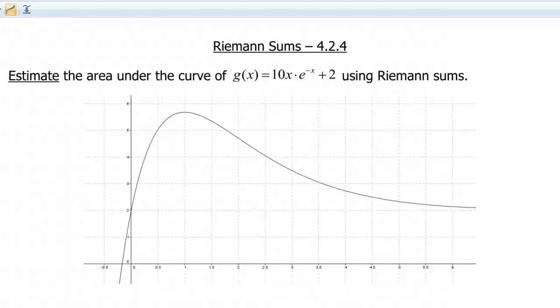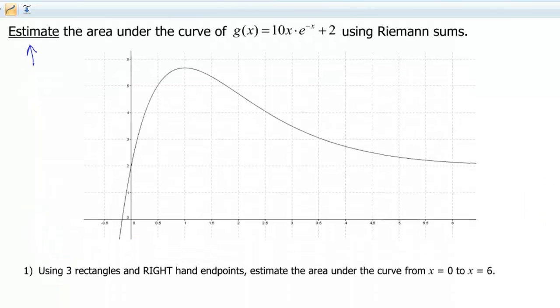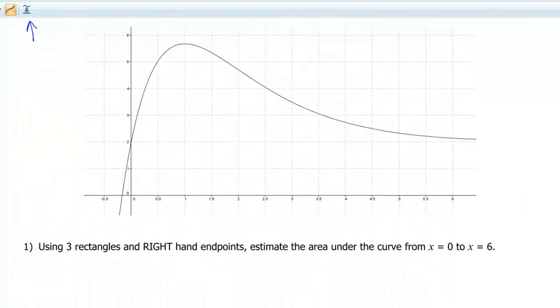Hello, and welcome to another screencast about Riemann sums. We're going to be looking at the same curve as last time, and that is 10x times e to the negative x plus 2. We're going to be estimating the area under the curve using Riemann sums. We are going to use three rectangles, just like last time, and we're going to be using right hand endpoints this time.